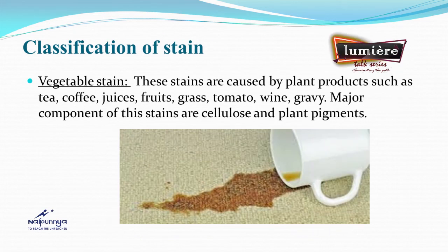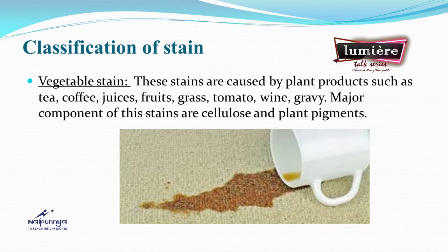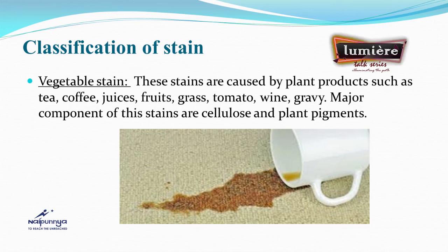The major component of many vegetable stains are cellulose and plant pigments.